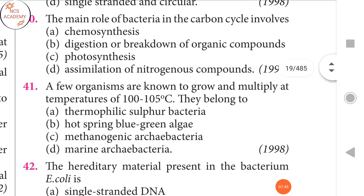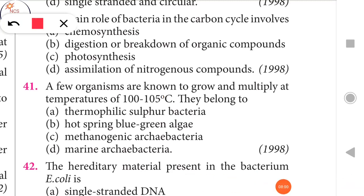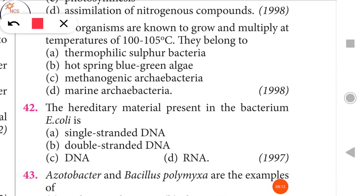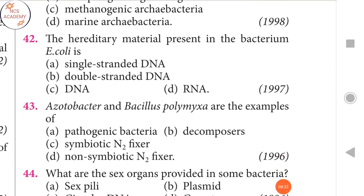Next question: A few organisms are known to grow and multiply at temperatures of 100 to 105 degrees Celsius. They belong to thermophilic sulfur bacteria — that is the right answer. Next: The hereditary material present in the bacterium E. coli is double-stranded DNA.